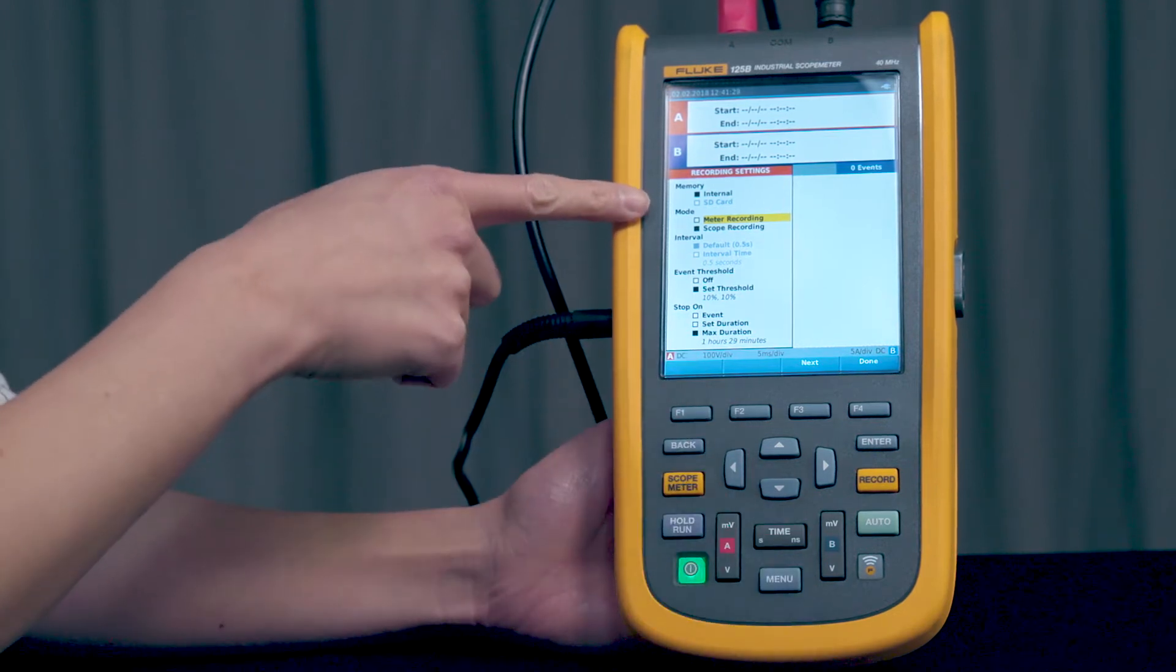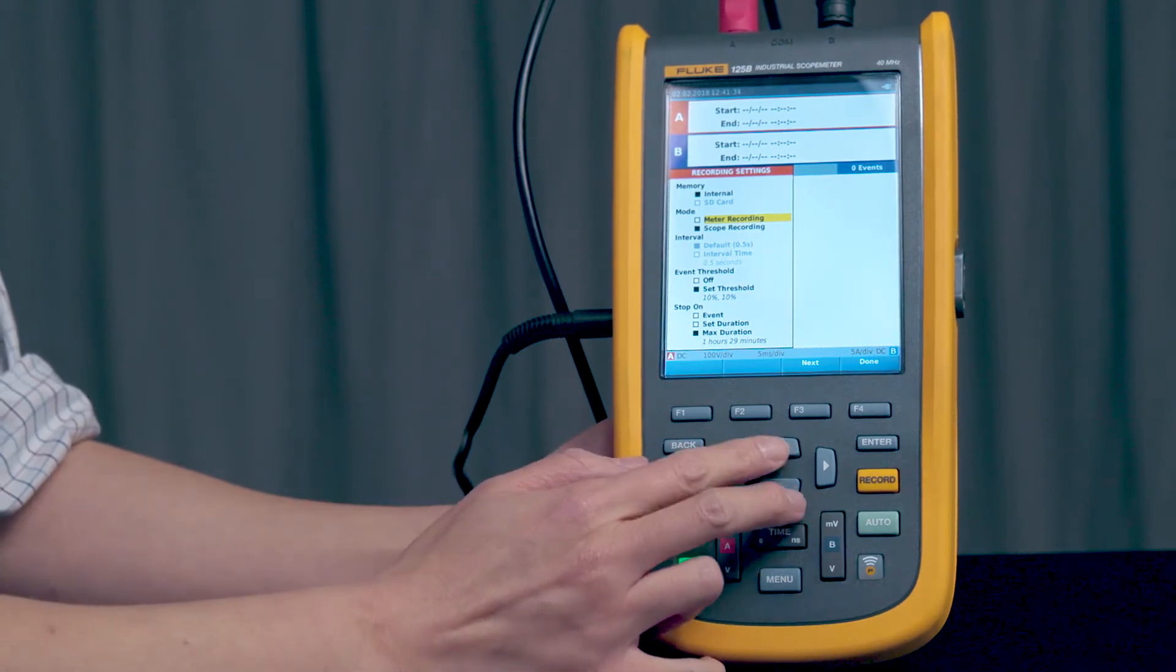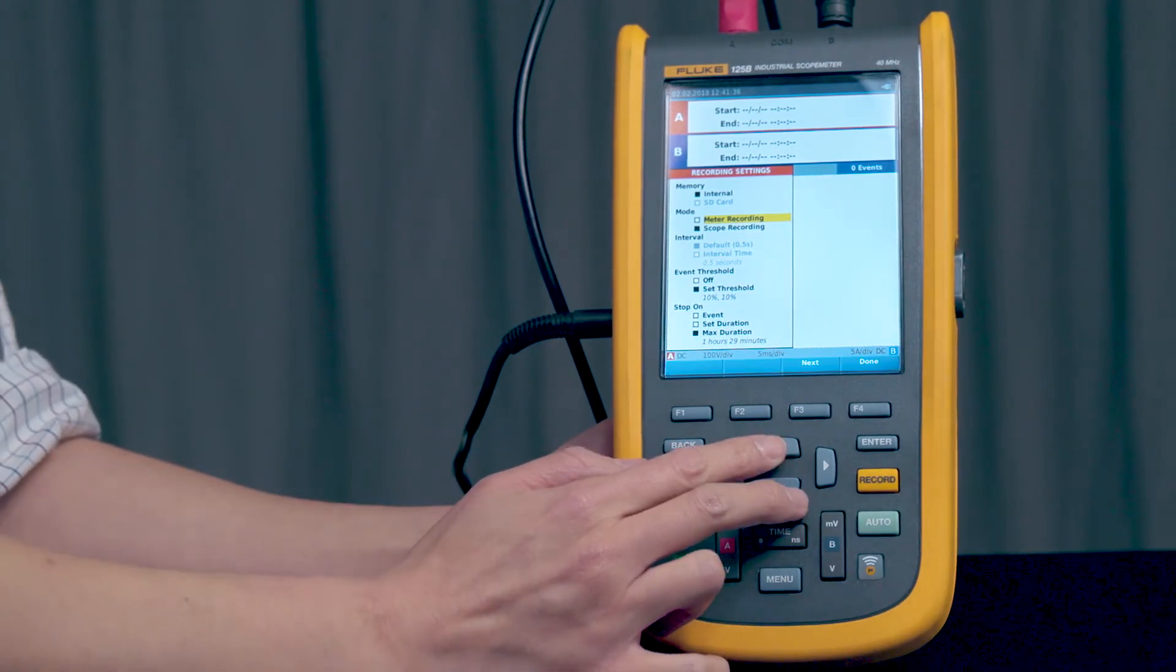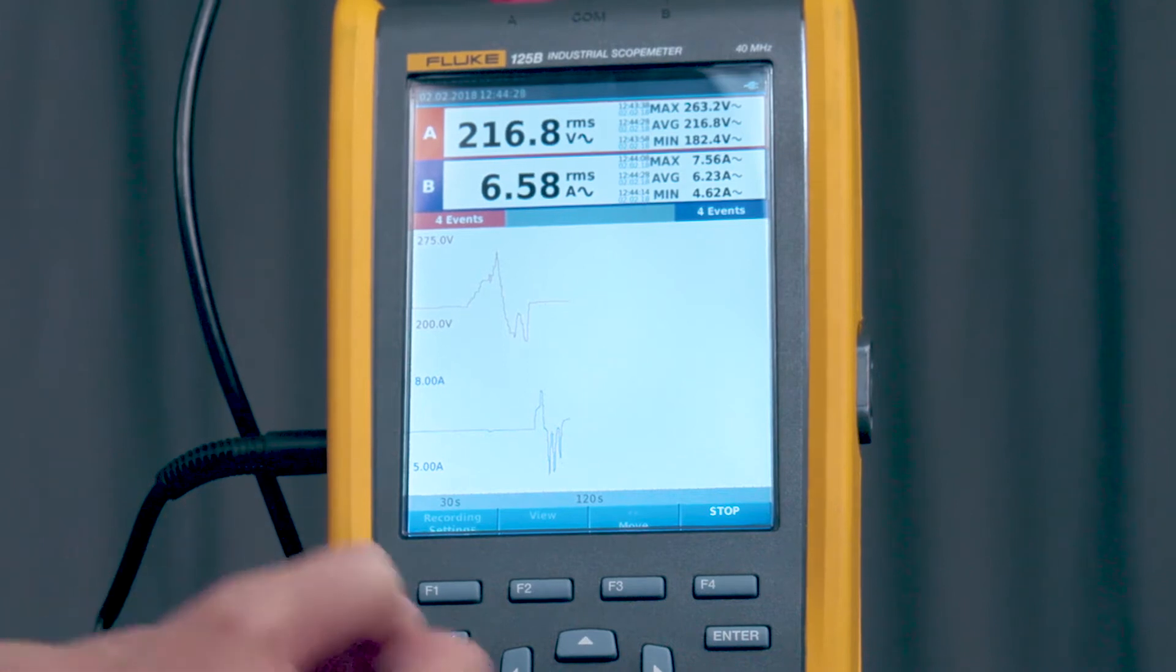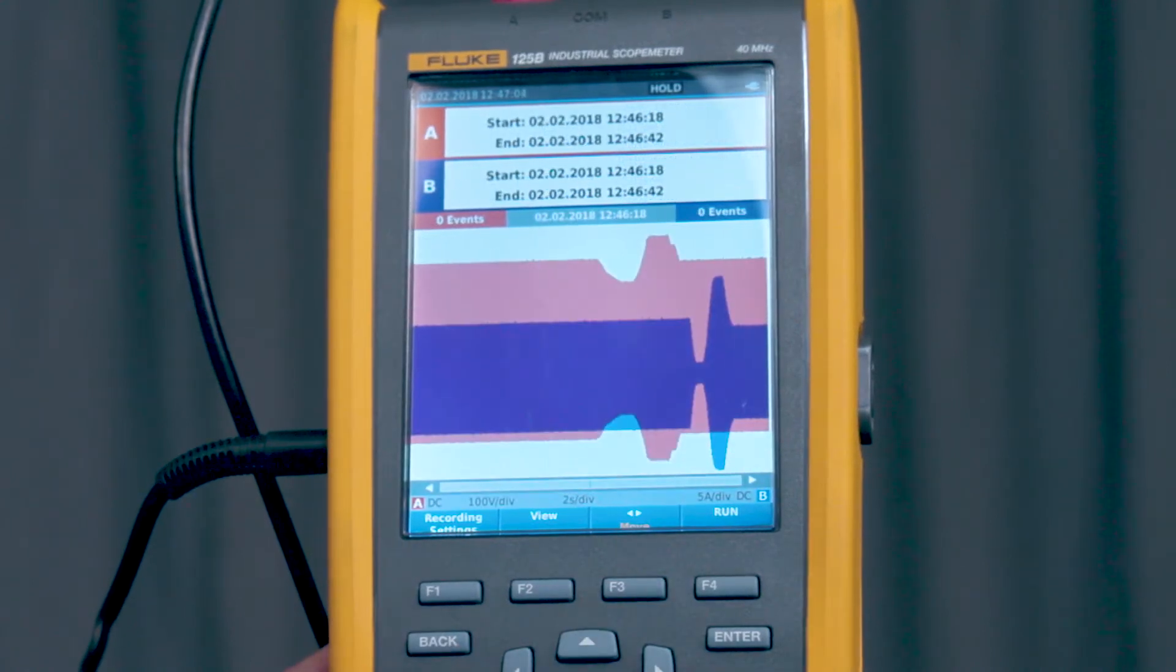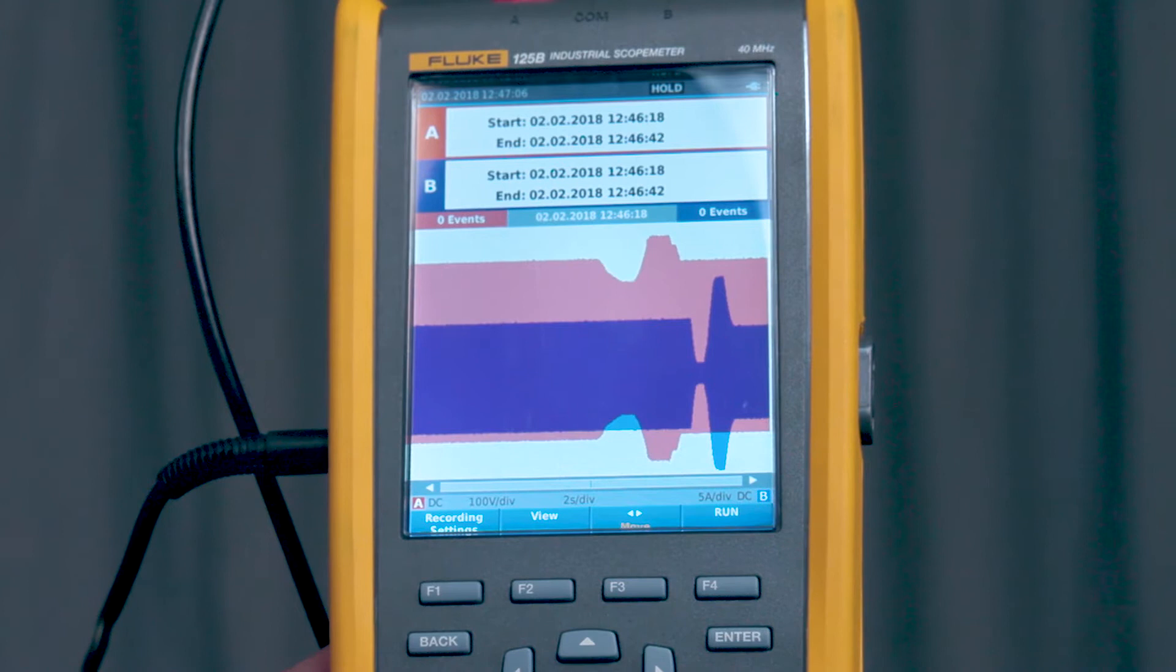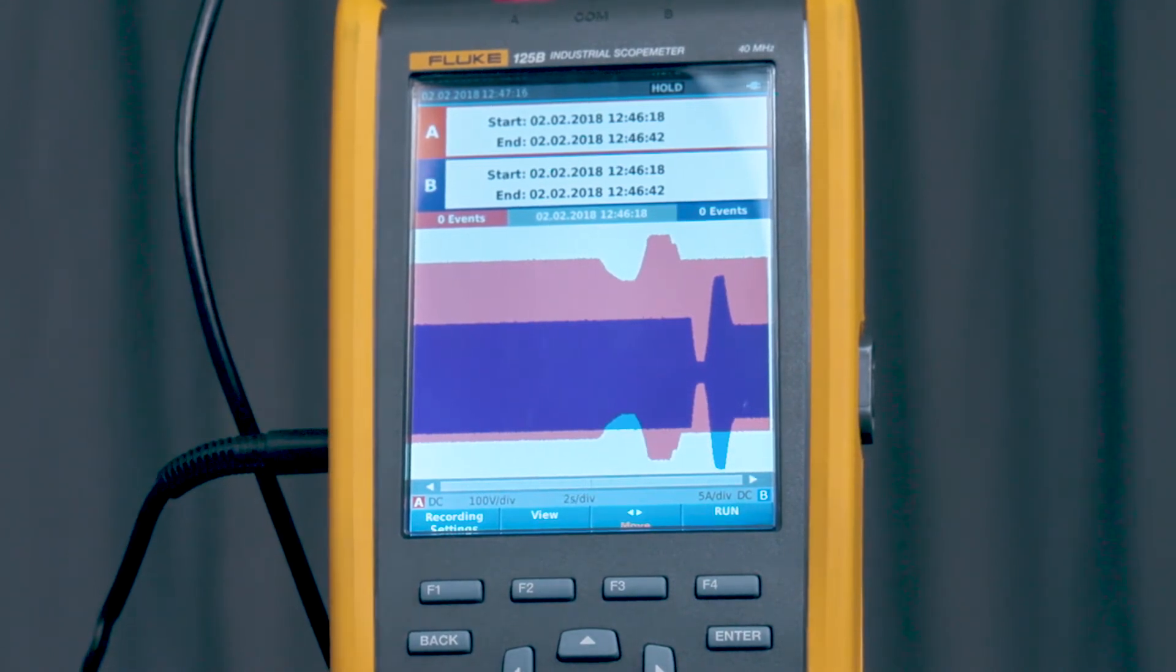Second selection group is mode. Now there are two different recorder modes. There's meter recording and scope recording. Meter recorder mode trend plots the measurement over a period of time and it captures up to 1,024 events and can record up to 384 hours. Scope recorder mode continuously records waveforms over a period of time and can record or capture up to 64 events and up to 14 days of recording if you have a 32GB micro SD card inserted.